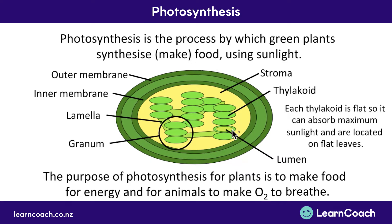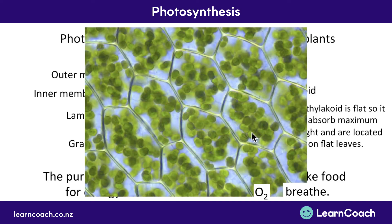The thylakoid is very flat so it can absorb the maximum amount of sunlight — sunlight is critical to make the whole process happen. With a flat disk facing the sun, it absorbs the most sunlight and makes the most food for the plant. Here is a real photo: every hexagon is a plant cell, and the green disks throughout are the chloroplasts. You'll notice these disks are flat and almost all facing upward to absorb maximum sunlight.